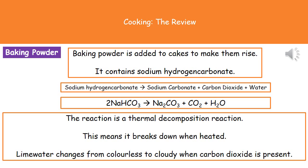Baking powder contains a chemical called sodium hydrogen carbonate, and when we heat sodium hydrogen carbonate, it breaks down to make three things: sodium carbonate, carbon dioxide, and water. You can see both the word and symbol equations on screen, and practice balancing those symbol equations.